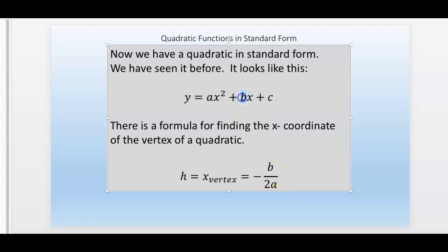The b is in front of the linear term x. The a is in front of the quadratic term, the leading coefficient. You put in the formula, you find the x-coordinate of the vertex. That's the h.